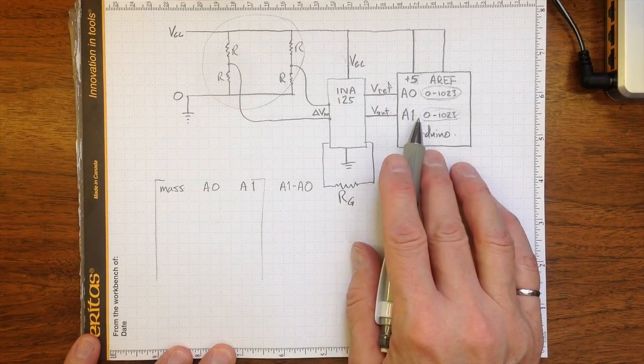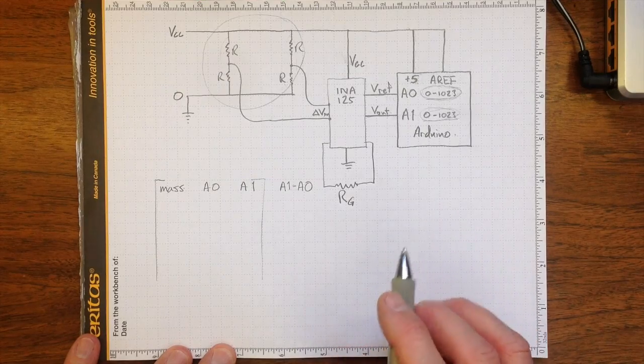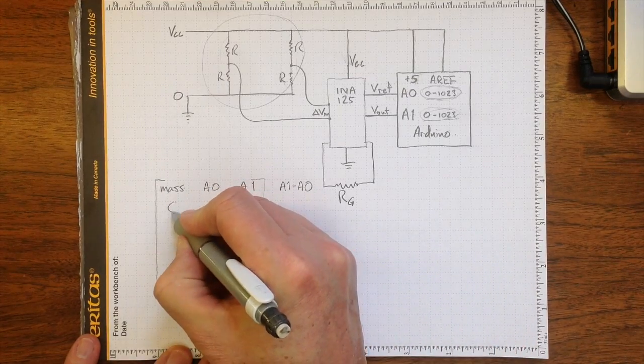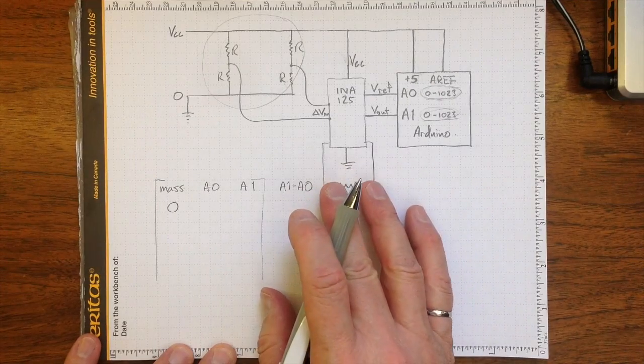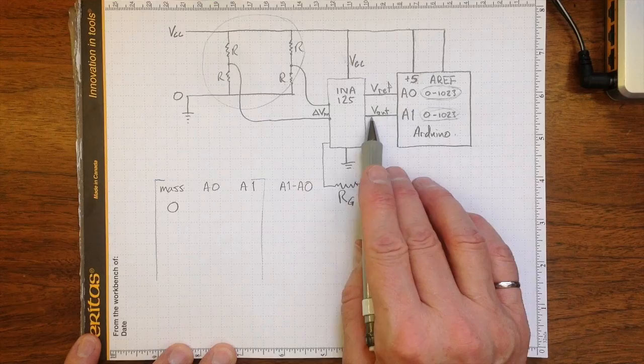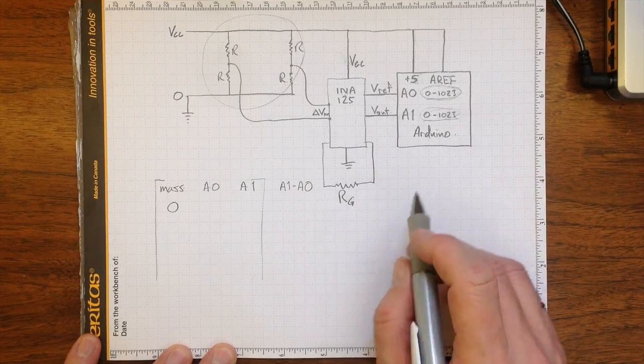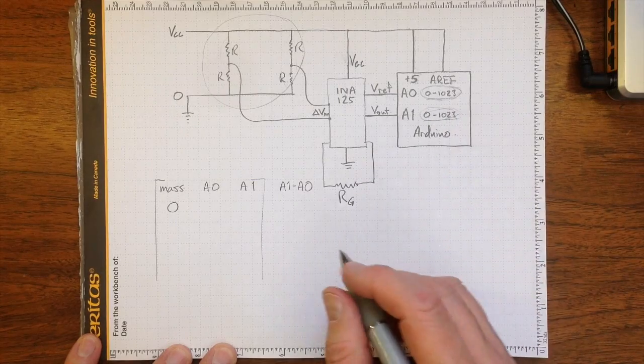Suppose we've hooked it all up and now we start applying mass to the end of the cantilever beam load cell. If we have no mass on the end of the beam, then there'll be nominally no deflection and we'll need to measure what our reference voltage and our output voltage are. We can get that from the digital conversion values.